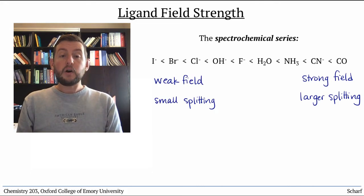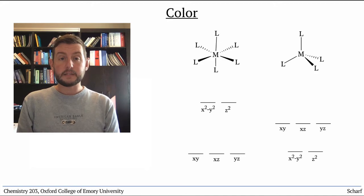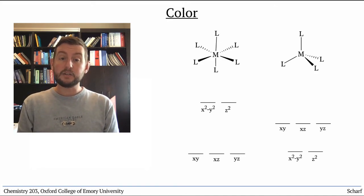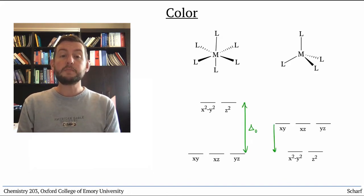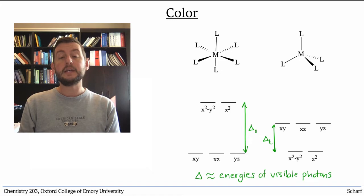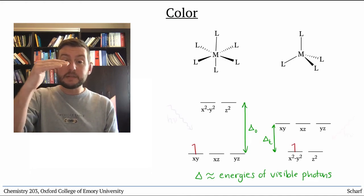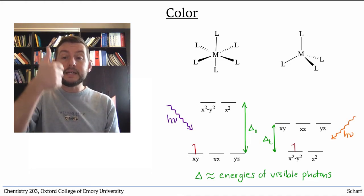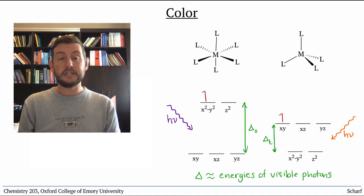Ligand field strength also has an impact on the color of transition metal complexes. Many transition metal complexes have intense colors because the energy gaps between the d orbitals correspond to energies of photons in the visible region of the electromagnetic spectrum. So compounds with d electrons can absorb visible light, promoting d electrons from low-energy d orbitals to higher-energy d orbitals.